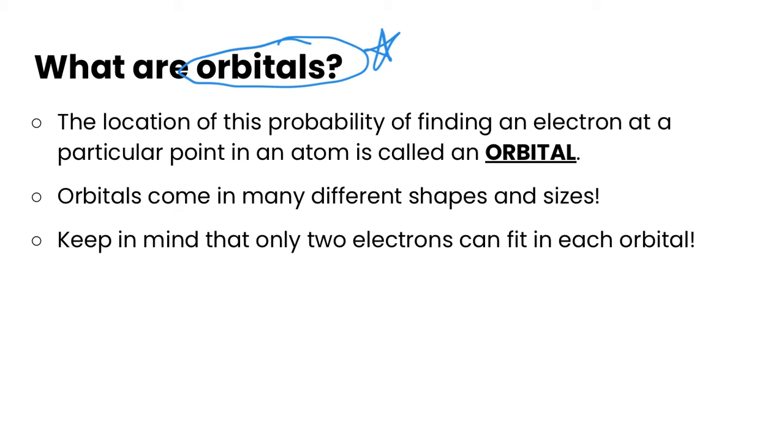What is an orbital? It is the location of the probability of finding an electron at a particular point in an atom. Schrödinger's equation is a wave equation that describes what the probabilities are of finding those electrons, and the result of that is an orbital. Because it's a wave equation, orbitals come in many different shapes and sizes, and the shapes and sizes get bigger and crazier as we move further away from the nucleus. One thing to keep in mind is that only two electrons can fit into each orbital.